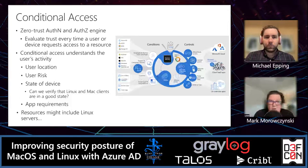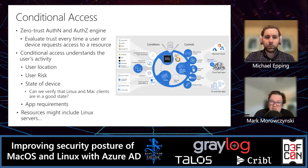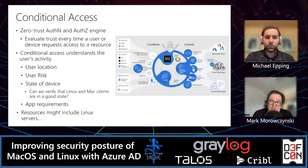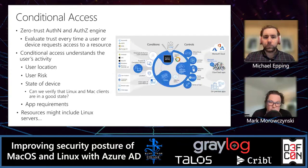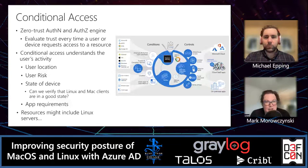From a Conditional Access perspective, you can configure policies based on where the user is coming from, any risk on the user, what type of device they're using, whether it's in a healthy state, and application requirements. For example, you can require that email on a mobile phone must come through the Outlook mobile app — preventing attachments from being saved to a personal OneDrive or Dropbox. Resources like Linux servers can also be protected this way.